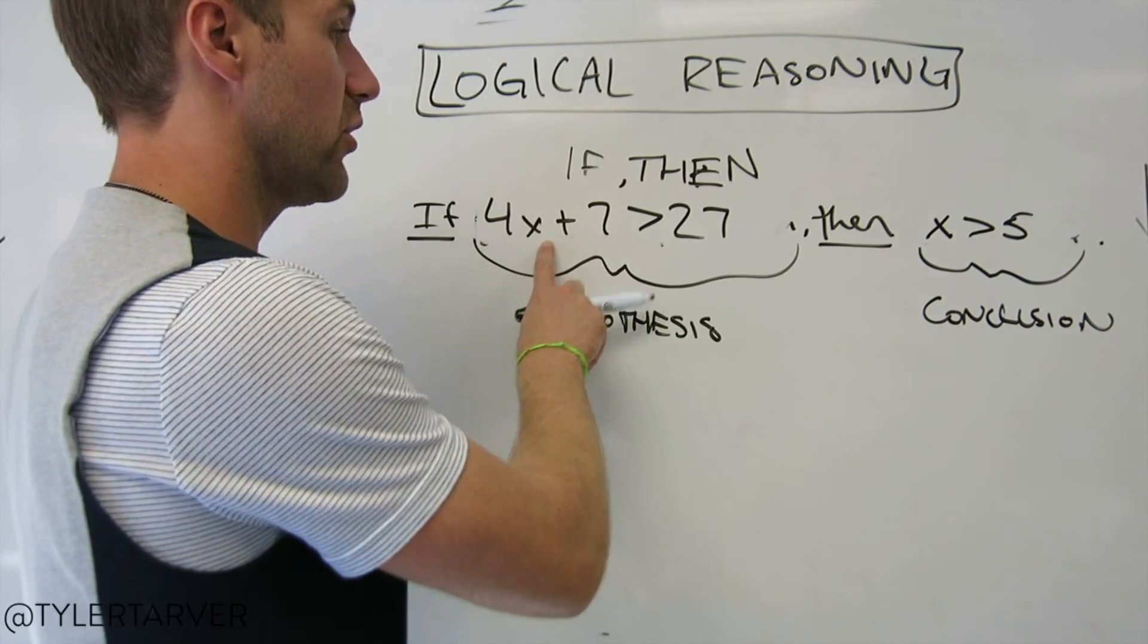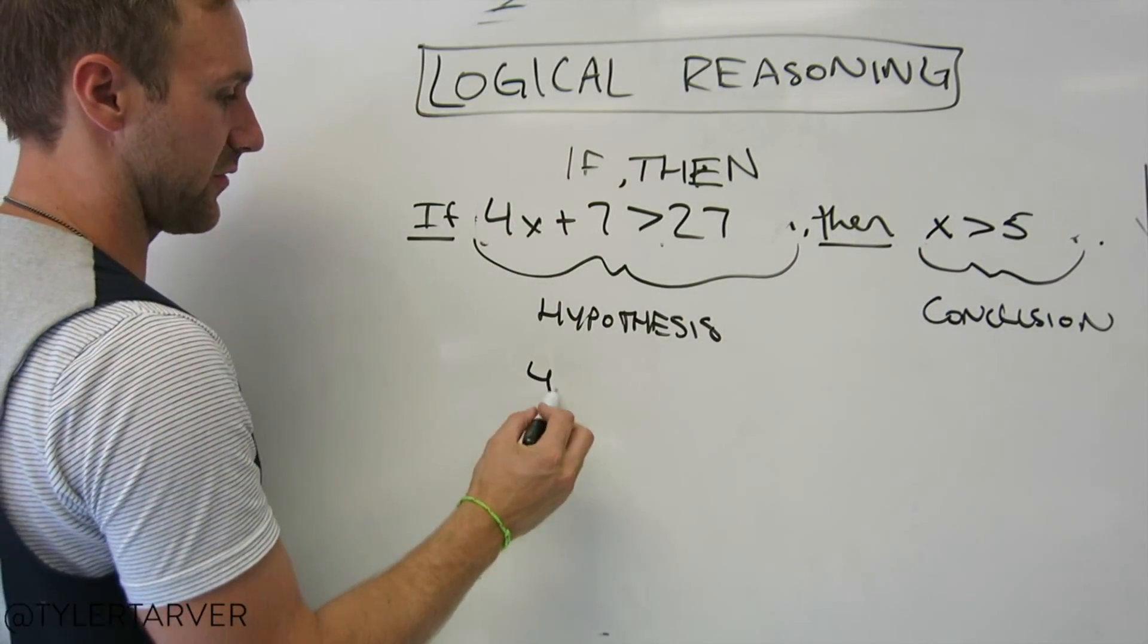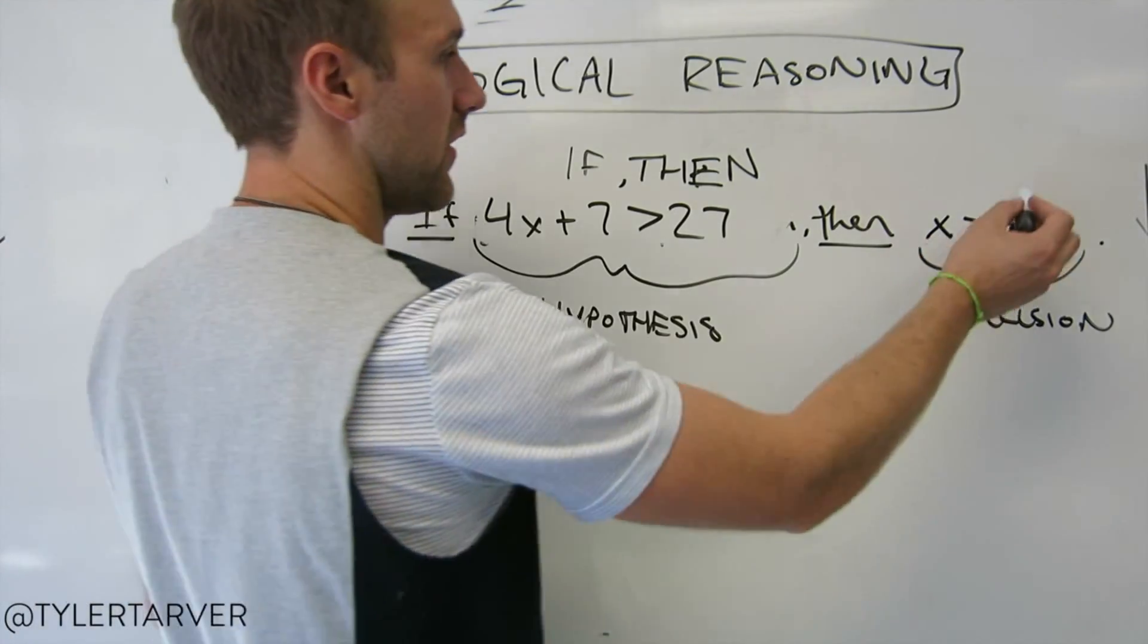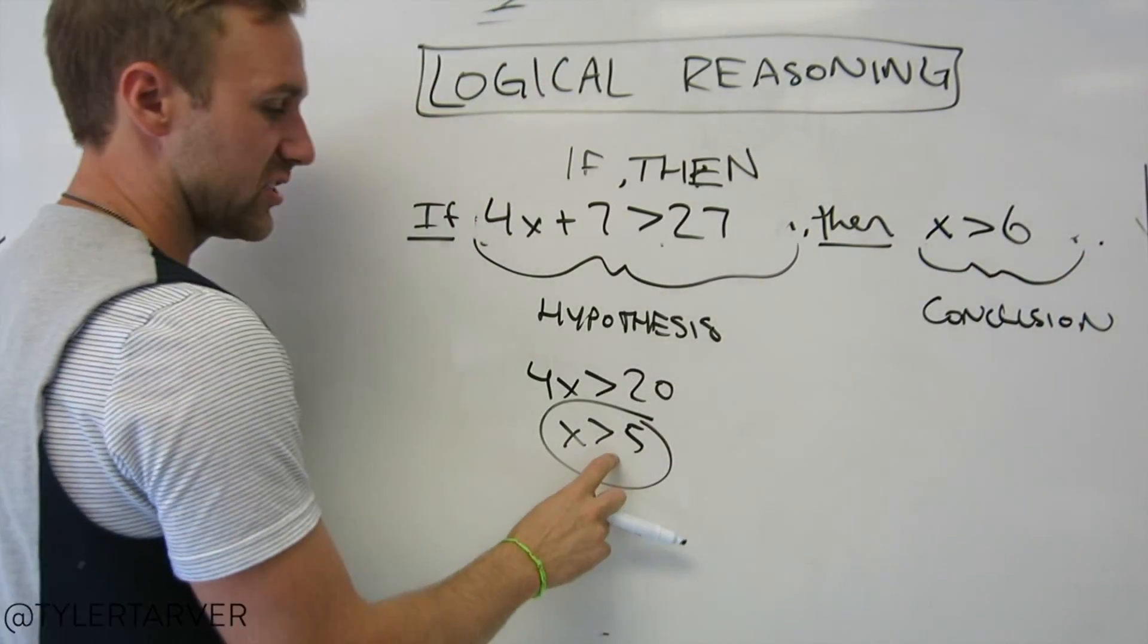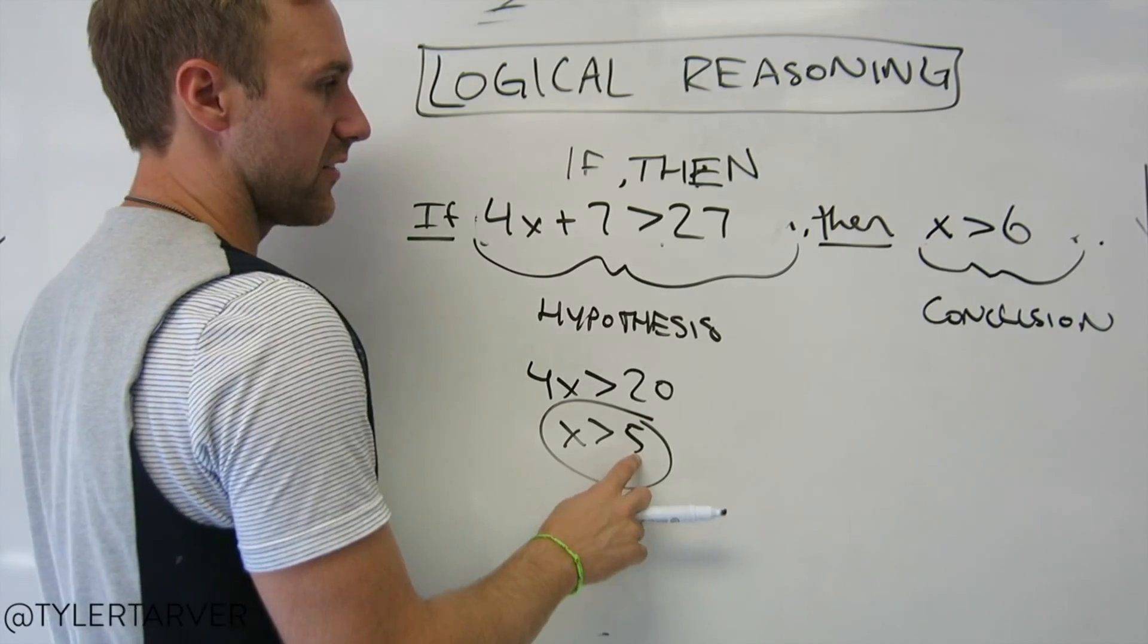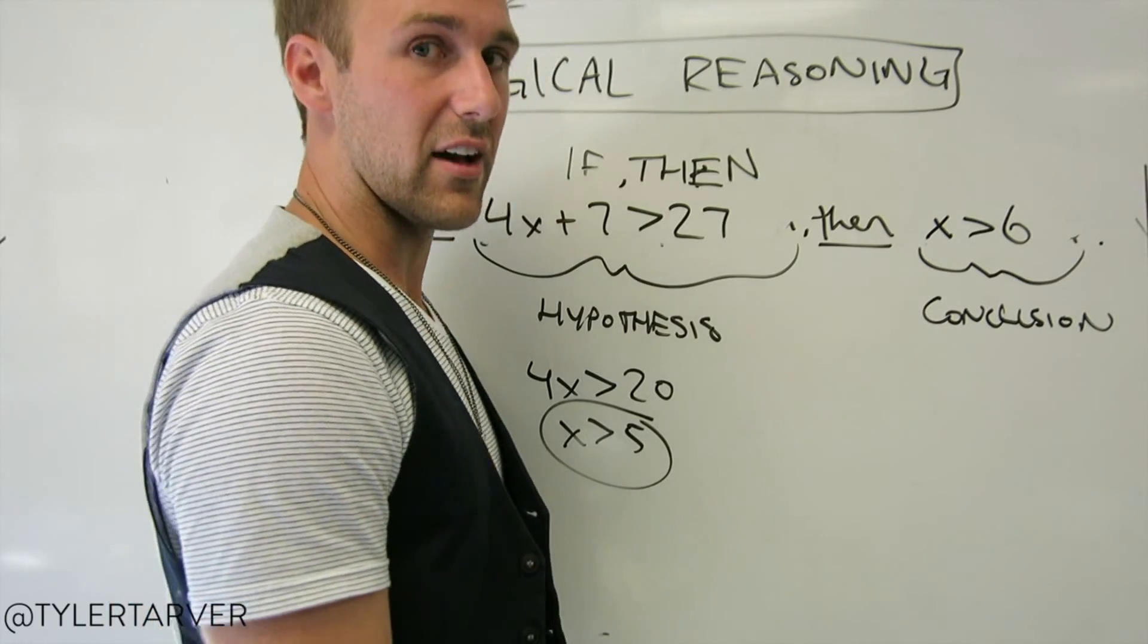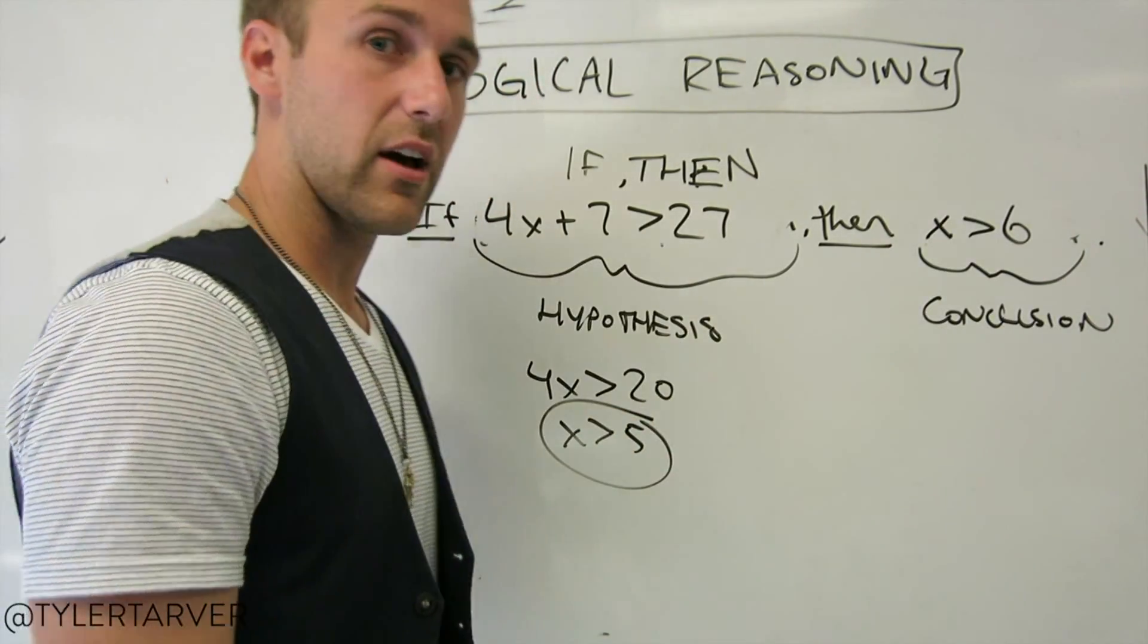Now, if this is true, then this has to be true. Well, let's see. We've got 4x plus 7. We subtract 7 from both sides. We've got 20 divided by 4. It's 5. Well, if that's true, then that's true. Maybe a better example would have been this. If this is true, does that mean this is true? If our x is greater than 5, does that mean our x has to be greater than 6? Or does that mean x is greater than 6? Not necessarily. It could have been 5 and a half. Okay? So, that brings me to my next point. It's called a counter example.